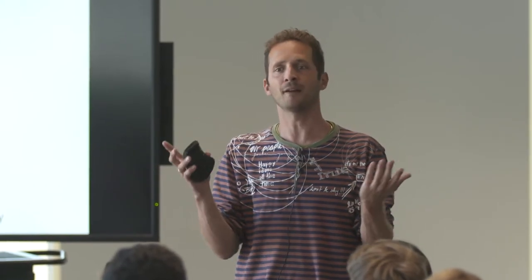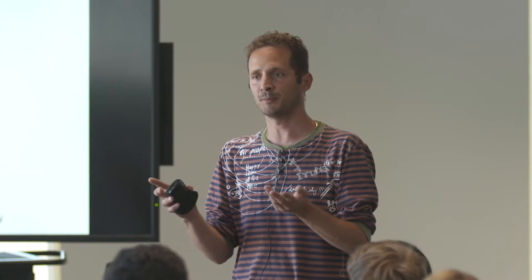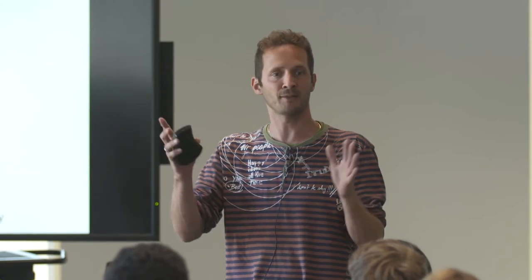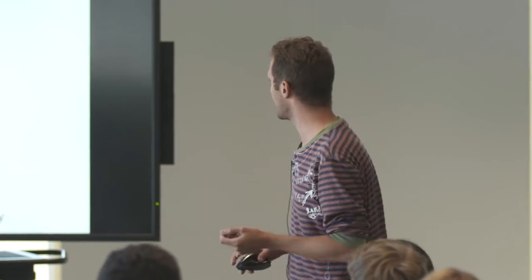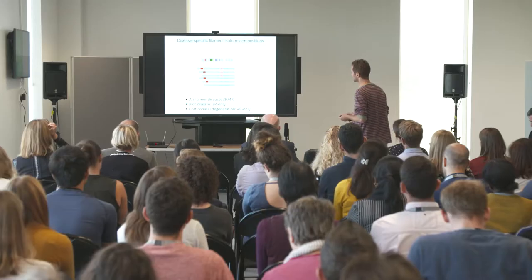In its normal happy life, this is what tau is supposed to be doing — stabilizing microtubules in the neurons. But then there is this aggregated, unhappy state which happens in disease.